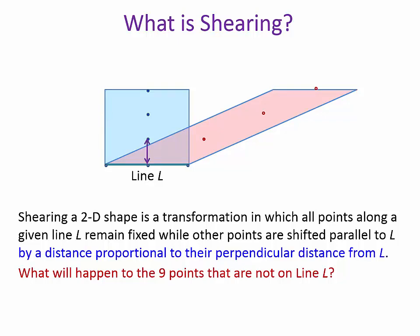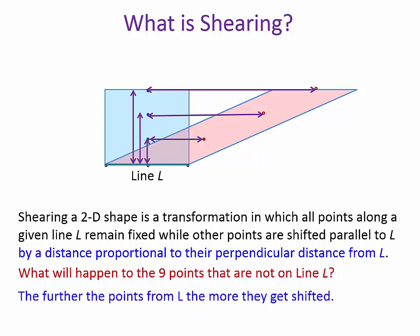Let's illustrate with 3 points. The point that is nearer got moved a little. The point that is further away got moved more. And the point that is on the top side of the rectangle got moved the most. So points are shifted by a distance proportional to the perpendicular distance from line L — basically, the further the points from L, the more they get shifted.